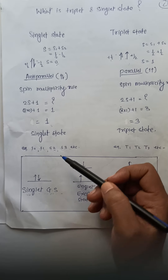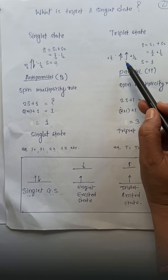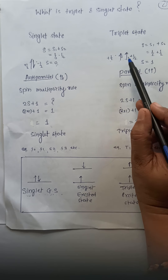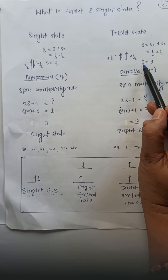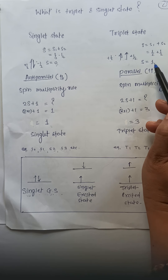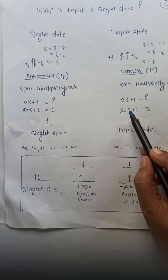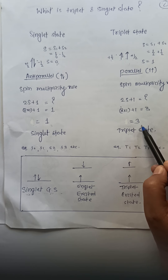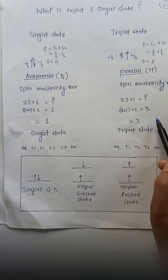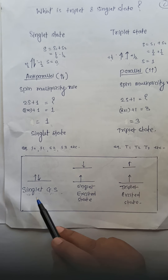In the triplet state, the direction of both electrons is the same, and both have a value of +½, so S = 1. When we put S = 1 into the spin multiplicity rule (2S + 1), we get the value three, which is the triplet state, written as T1, T2, T3.